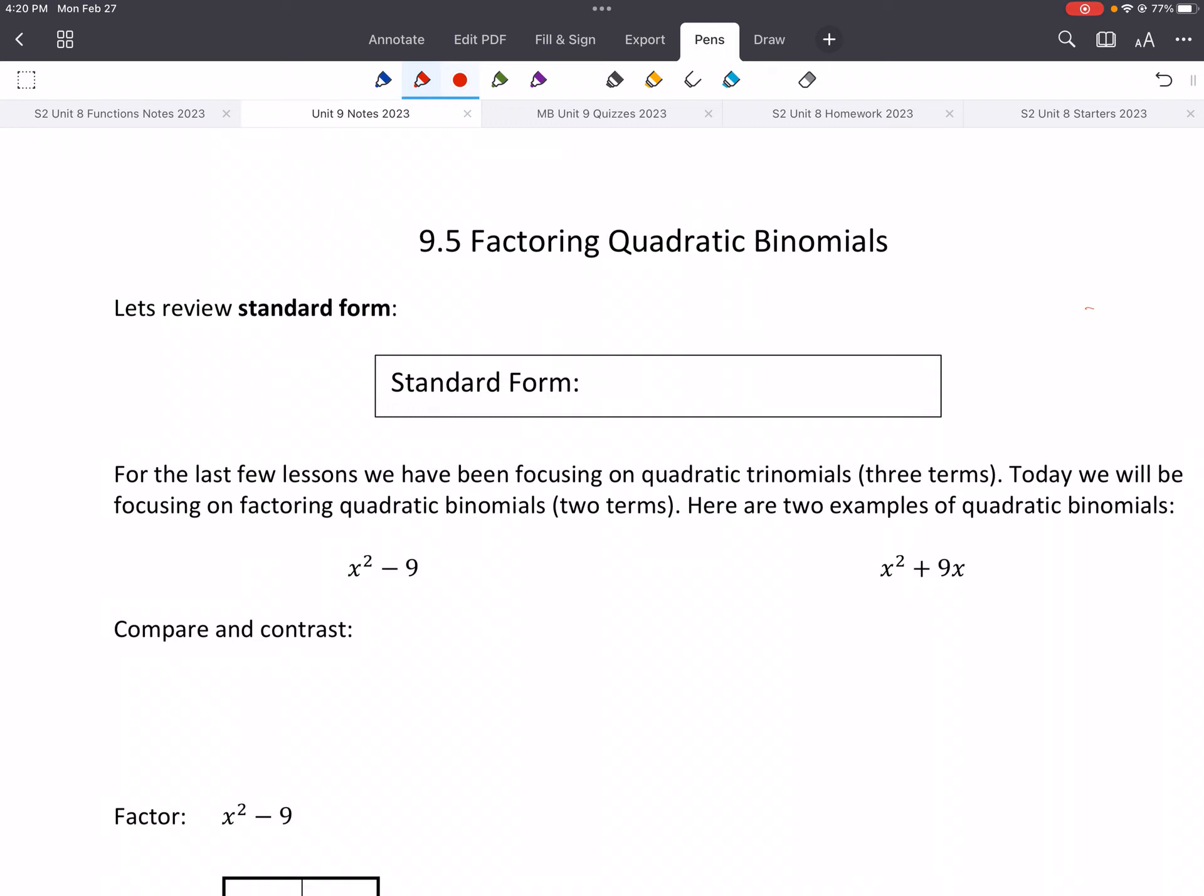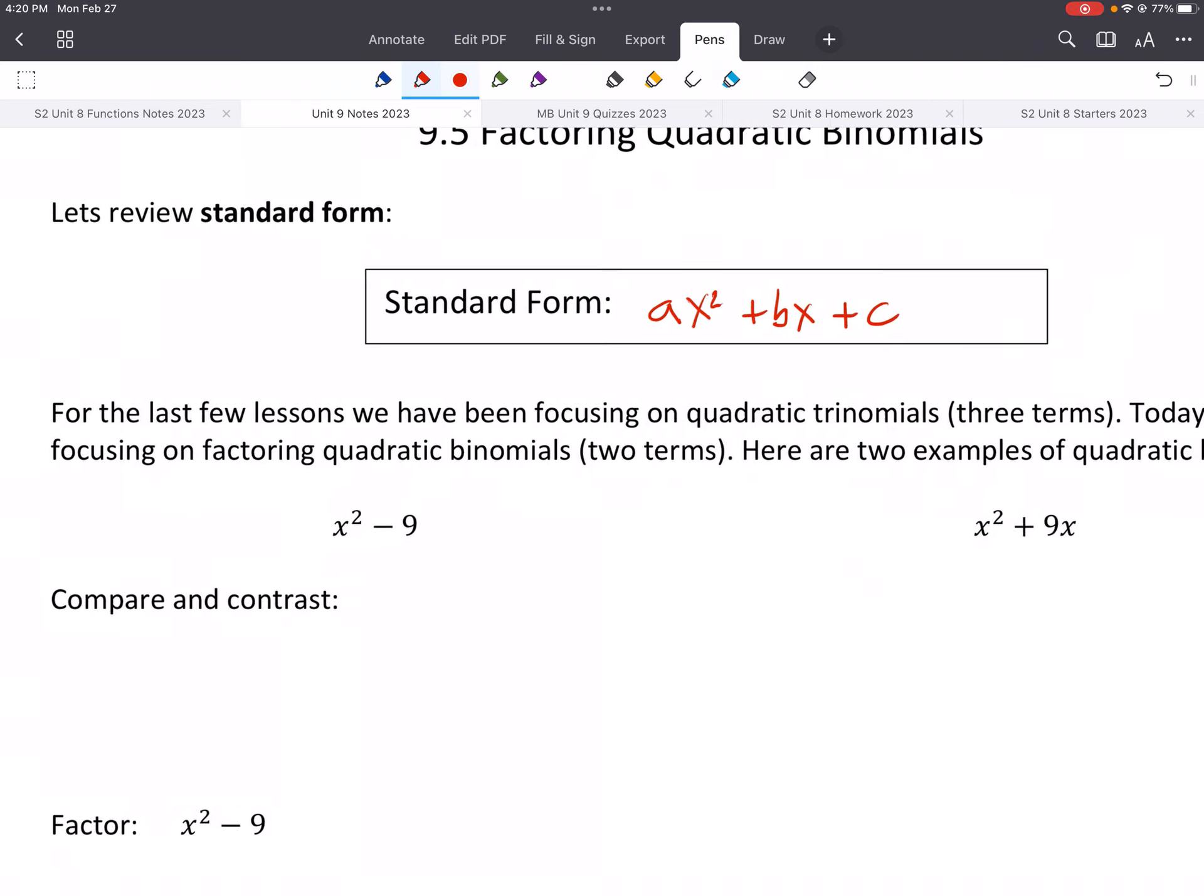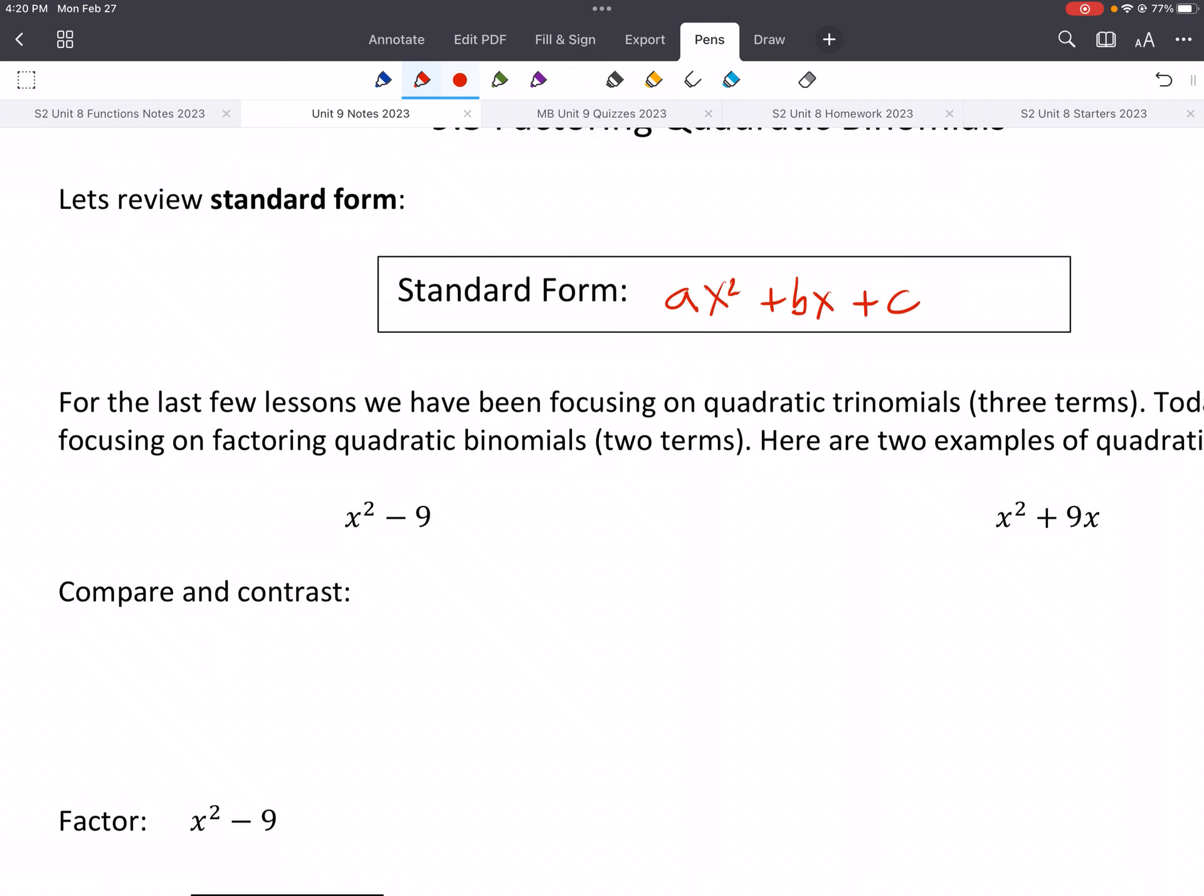So, we're really doing the same thing that we've been doing in the past. It just looks a little different. Before we get into this too far, let's write down what the standard form is for a quadratic. So it's ax squared plus bx plus c, where a, b, and c are just numbers. It could be 1, 5, 7, negative 2. It could be anything.